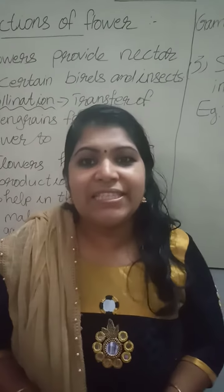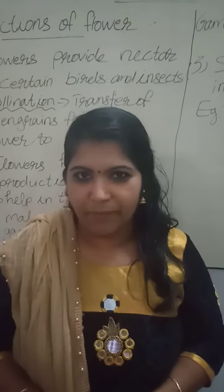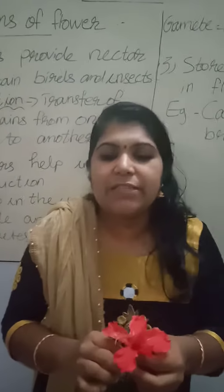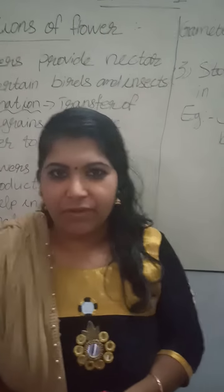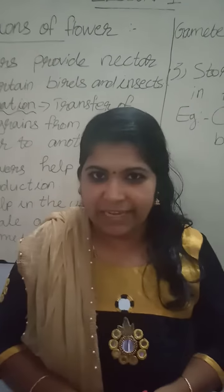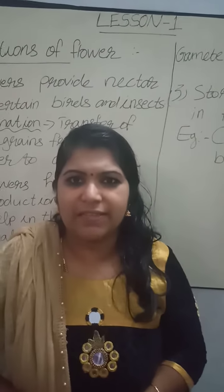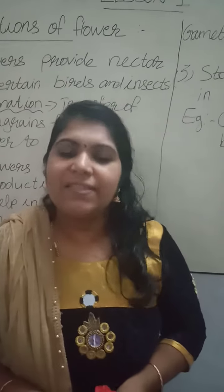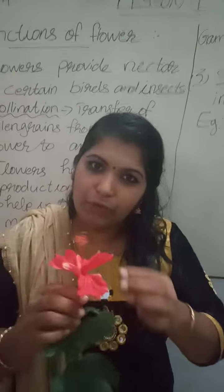So today we will discuss the different functions of a flower. So mainly the flowers produce a sweet smelling liquid that is known as nectar. So insects are attracted to nectar. Give an example for insect — bee is an example for insect. So when an insect lands on the flower to feed...